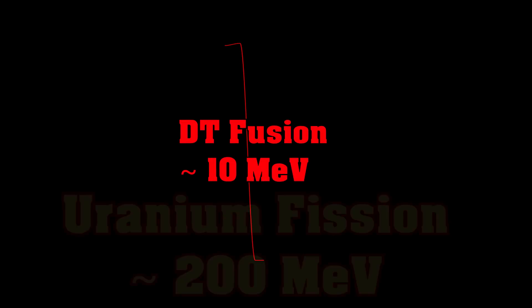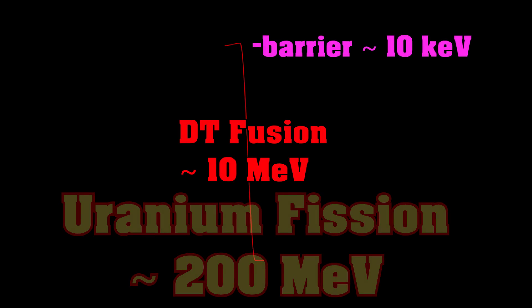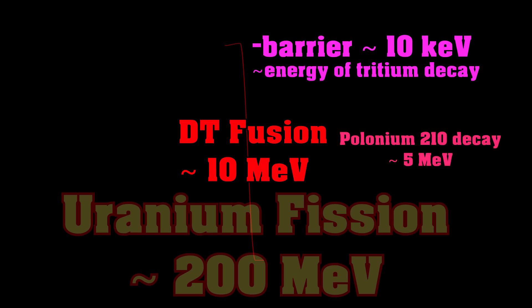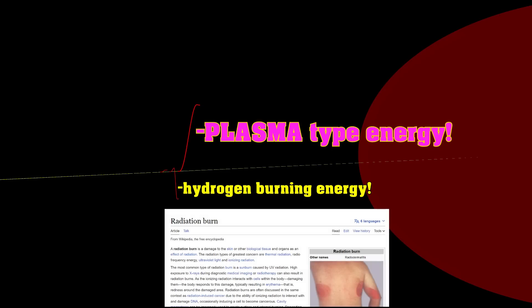So, fusing deuterium and tritium releases about 10 mega electron volts. Splitting a uranium atom releases about 200 mega electron volts. But of course, to split a uranium atom, you can do without that huge killer electron volt barrier. That barrier is tens of thousands of electron volts. Which is comparable to the energy of the beta particle that tritium gives off. Whereas the alpha particle was about 5 mega electron volts. Which, if we zoom back in to how much energy our chemical bond has, you can still see that there's enough energy in these particles to break an awful lot of chemical bonds in organic life.